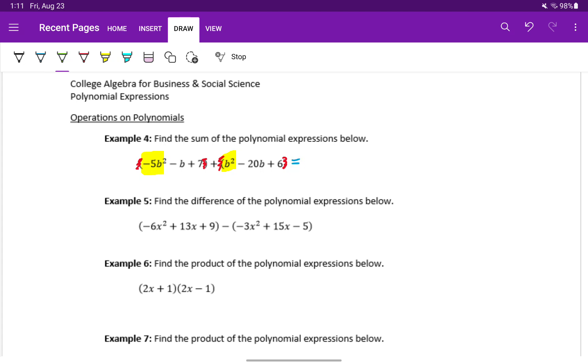So we can combine those like terms to make this negative 4b squared minus b plus 7 minus 20b plus 6.